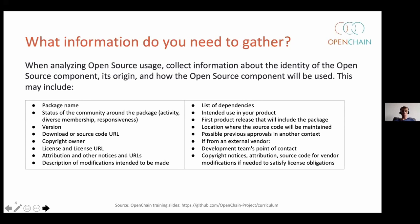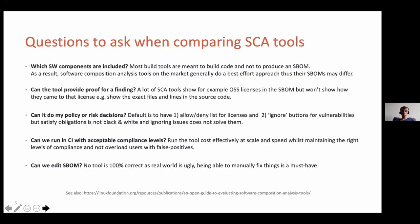Basically what OpenChain material says about what you need to get already overlaps with what we need in an SBOM. It's a long list of things that you need to get. This is where we basically started — this list also matches what we have to send to our customers, so let's see how we get that information.